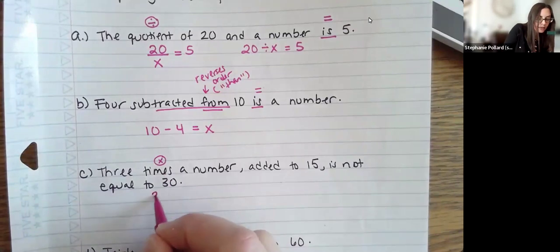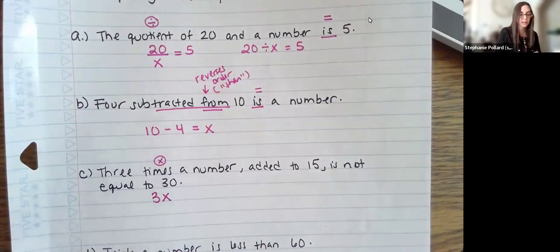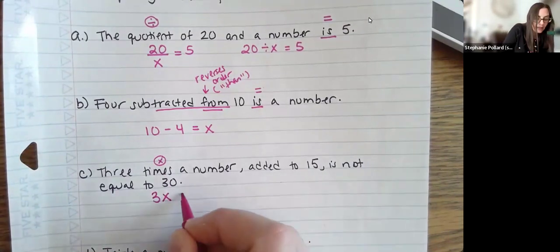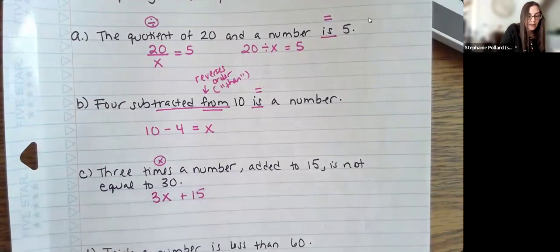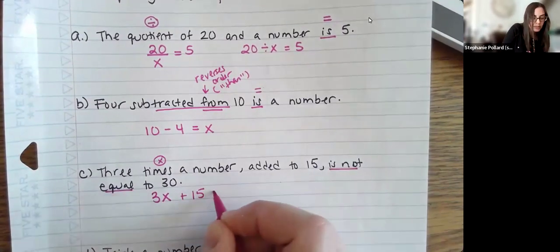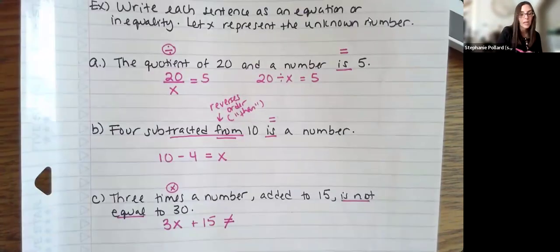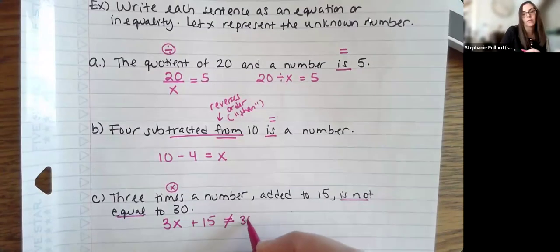So I have 3 times a number would be 3 times x. We're going to add that to 15. And then is not equal would look like this. So it's the equal symbol with a slash through it. And then we have a 30 on the right side.